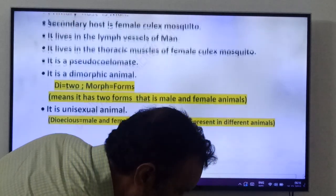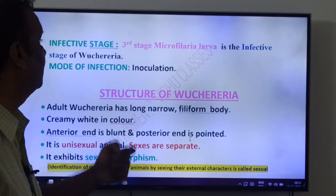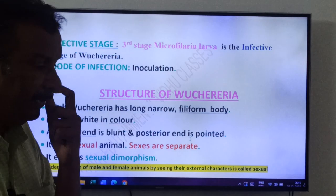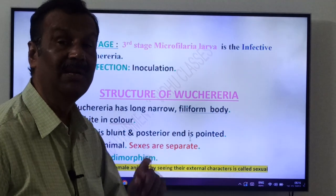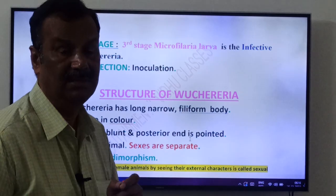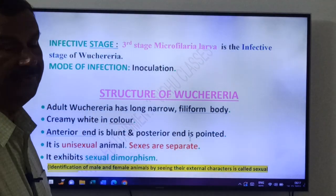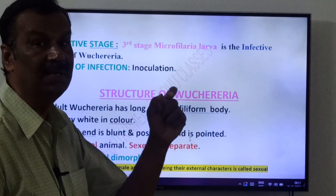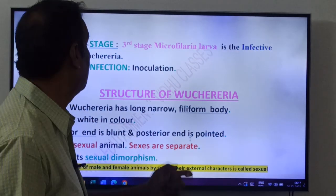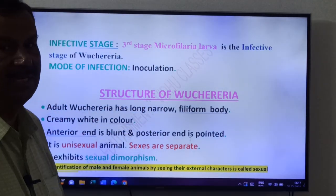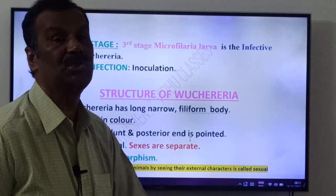The infective stage of Wuchereria bancrofti is the third stage microfilaria larva — very very important. The larva of Wuchereria bancrofti is called microfilaria larva. The larva of Ascaris is called the rhabditiform larva, and its infective stage is the second stage rhabditiform larva. Here, the infective stage of Wuchereria bancrofti is the third stage microfilaria larva. The mode of infection is inoculation — it infects man through the mosquito bite.